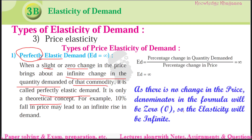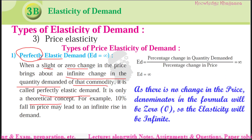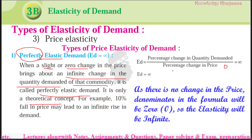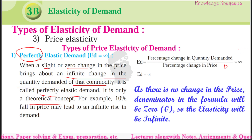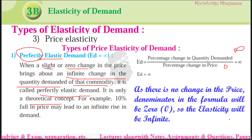What is the formula for elasticity of demand? Percentage change in quantity demanded divided by the percentage change in price, and the answer is infinite for perfectly elastic demand. As there is no change in price, the denominator in this formula is zero. Because the denominator is zero, the elasticity will be infinite. As per mathematical rule, if the denominator is zero, then the answer is infinite.